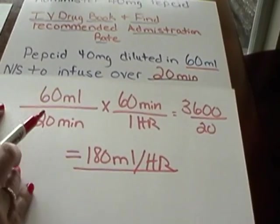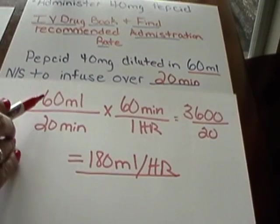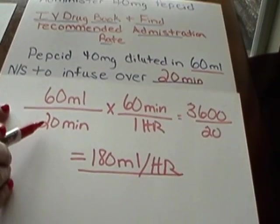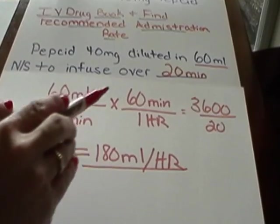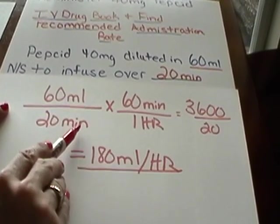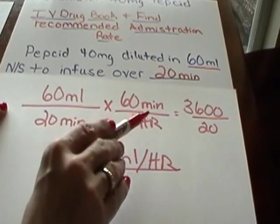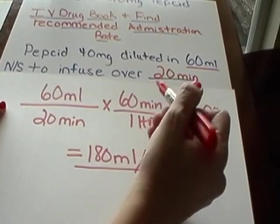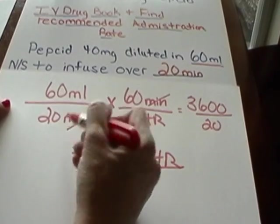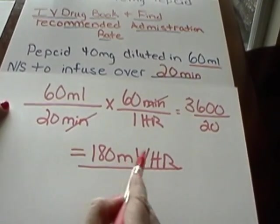Let's go back and review the steps of our problem. Our volume, 60 milliliters, is our numerator over our denominator, 20 minutes. We have to put in our extra step because our time is in minutes, and we say there are 60 minutes in every hour. Remember, we have to cross our minutes out so that we're left with milliliters per hour.